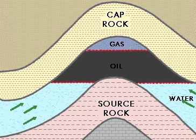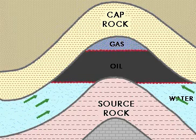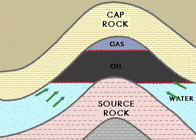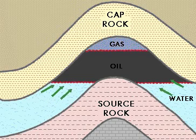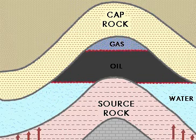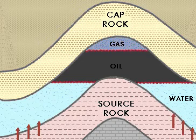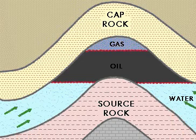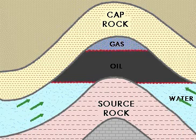As more and more sediments get deposited, the underlying sediments get compacted and oil from the source rock is expelled. This oil then starts moving vertically upwards. This process is known as primary migration.